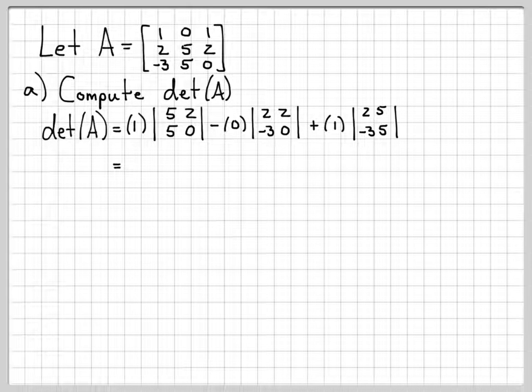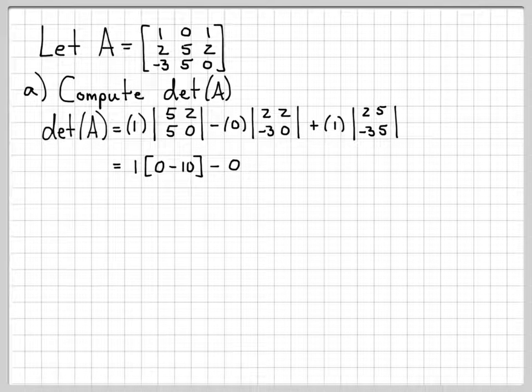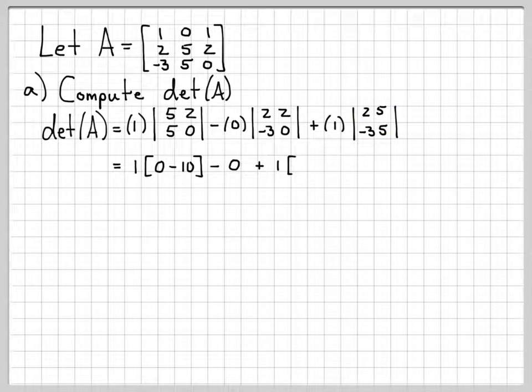And now we can continue our computation. The determinant of a 2 by 2 is very easy. You just multiply A times D minus B times C, the two cross terms. So it's going to be 1 times (5 times 0 minus 2 times 5, which is 10), minus 0 times this determinant, which we don't care about because it's going to be 0. The final 2 by 2, so that will be 2 times 5, which is 10, minus 5 times the negative 3, which would be a negative 15.